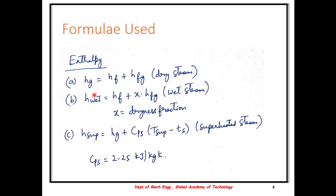The formulas listed are as below. HG is the total enthalpy content. For dry steam, it is HF plus HFG. Whereas for wet steam, the formula changes to HF plus X into HFG, where X is the dryness fraction. In case of dry steam, the value of X is taken as 1.